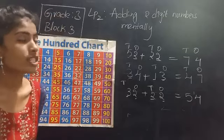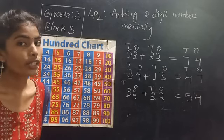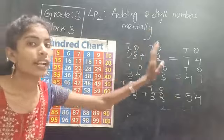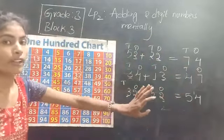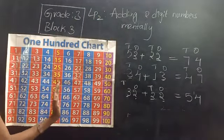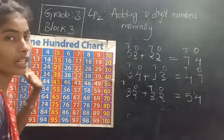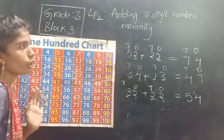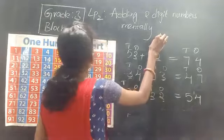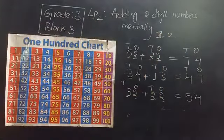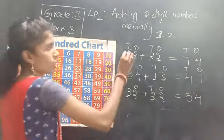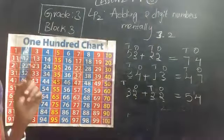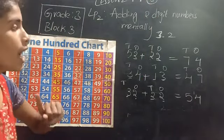These are the two terms we use in addition. To add numbers without the 100 chart, write the places, add 1s place with 1s place and 10s place with 10s place, then you get your answer. When using the 100 chart, go down as many steps as there are tens, and go right as many steps as there are ones. Have you understood children? Hope you all understood. Now you have to complete your worksheet 3.2.